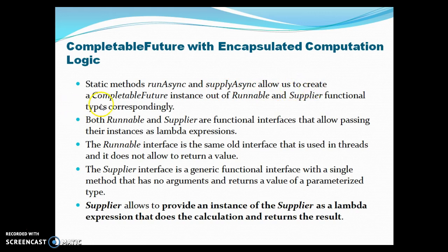The static methods `runAsync` and `supplyAsync` allow us to create a CompletableFuture instance out of Runnable and Supplier functional types correspondingly. Both Runnable and Supplier are functional interfaces that allow passing their instances as lambda expressions. They are functional interfaces because they are SAM interfaces — SAM means Single Abstract Method.